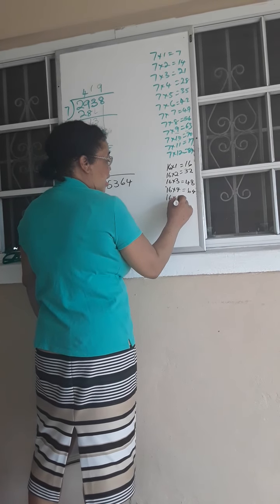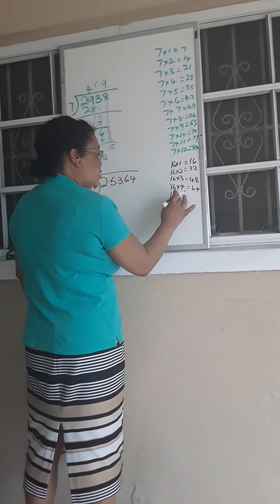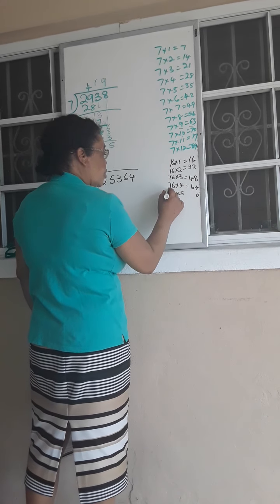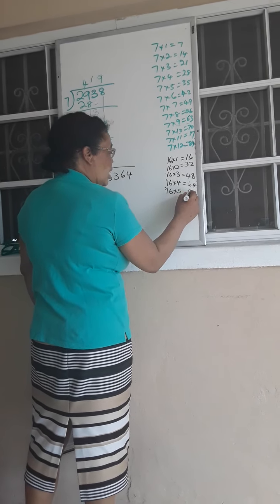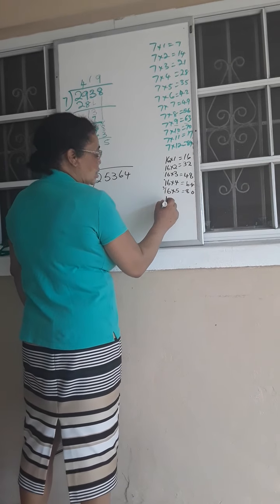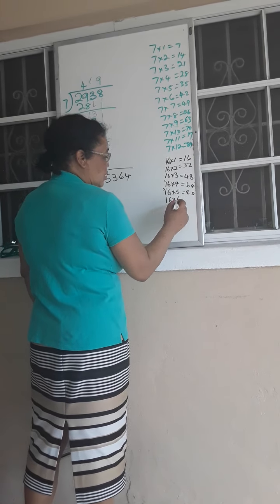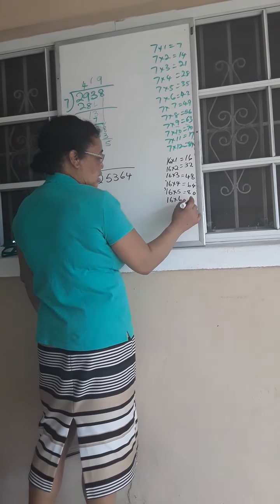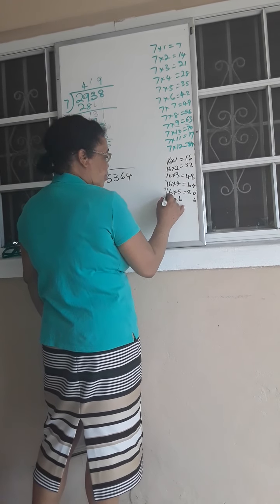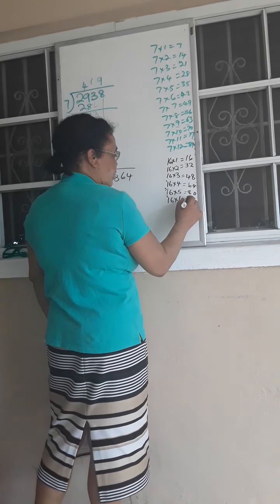16 times 5 is going to give me, 5 times 6 is 30, 0 carry 3, 5 times 1 is 5 plus 3 is 8, so 80. 16 times 6 is going to give me 6 times 6 is 36, 6 carry 3, 6 times 1 is 6 plus 3 is 9, so 96.